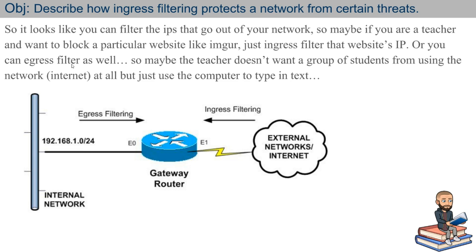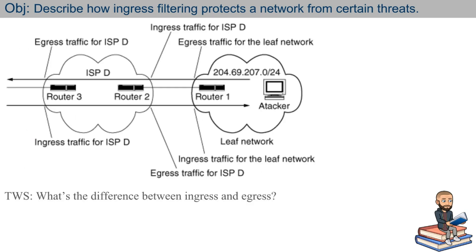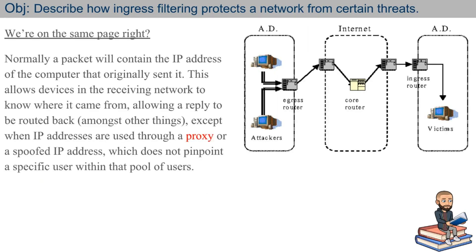Or maybe you use egress filtering. If a teacher knows a certain group of students are not very productive on the computer, you could egress filter their IP address so they can't get out to the internet, but they could still use their computer to do their work — type in a text editor, for example. Ingress and egress filtering can be done on a router or even on a computer; the host itself can filter out different packets.